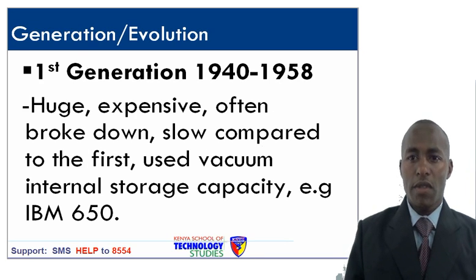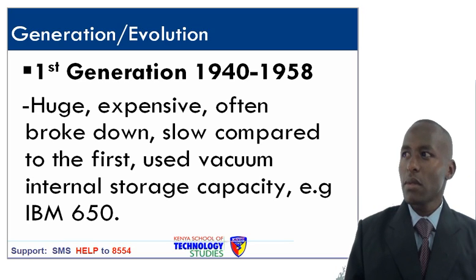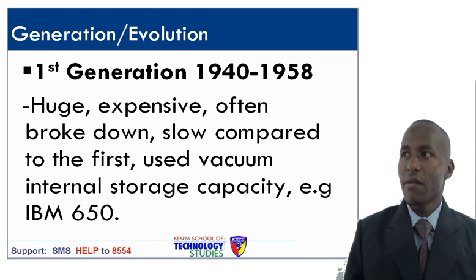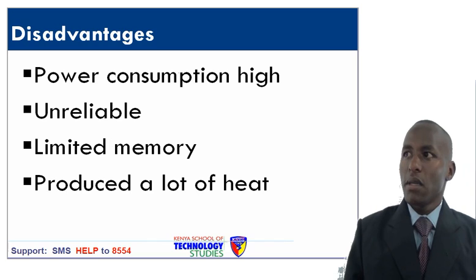The last category is generation or evolution of computers. The first generation was from 1940 to 1958. It was huge in size, very expensive, and often broke down. It used vacuum tubes for internal storage. A very good example is the IBM 650. Advantages: it was very fast in its early days and its vacuum tube led to the advent of electronic digital computers. Disadvantages: very high power consumption, unreliable, limited memory and produced a lot of heat.